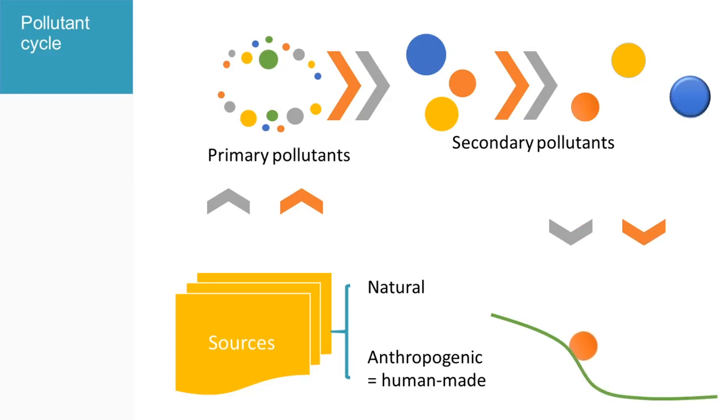Dry deposition refers to the impaction of the pollutant onto Earth's surface. Wet deposition indicates that the pollutant has been in contact with some aqueous medium, which can include dissolution in droplets, incorporation in clouds followed by precipitation, or collision with water drops that will wash them out of the air.